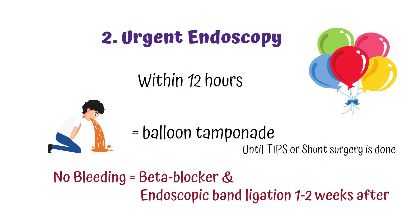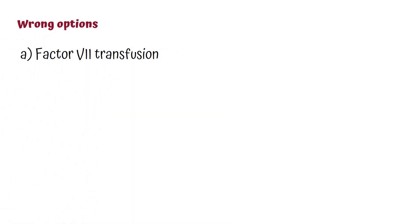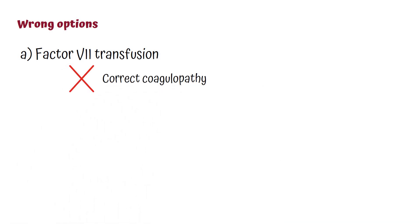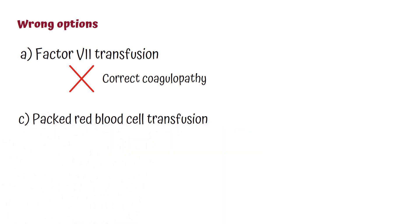Now let's look at the wrong options. Option A: factor 7 transfusion — factor 7 transfusion has not been shown to correct coagulopathy in active variceal bleeding. Option C: packed red blood cell transfusion — in variceal hemorrhage, it is recommended to keep hemoglobin levels at 9 grams per deciliter.